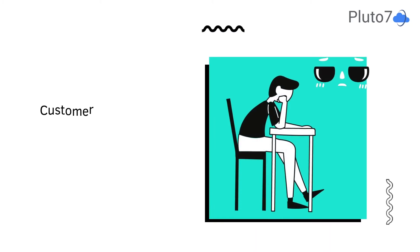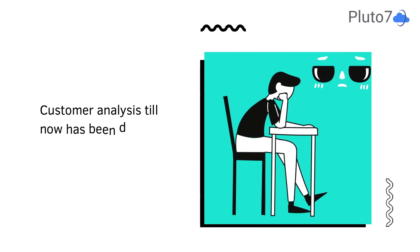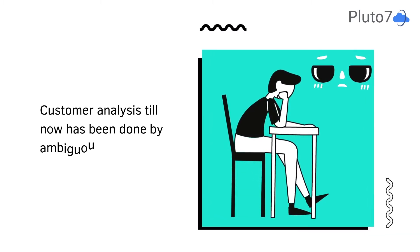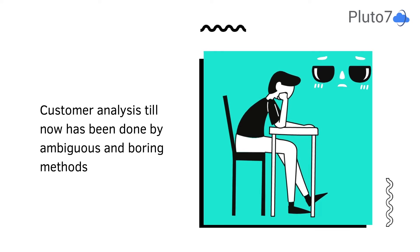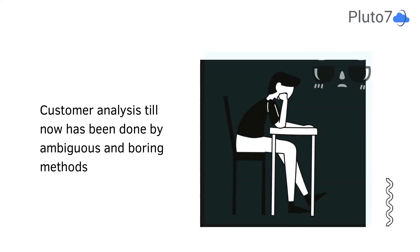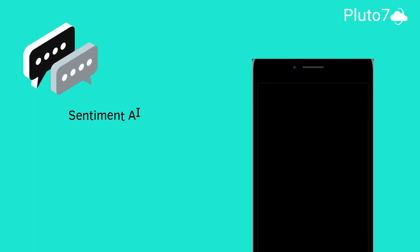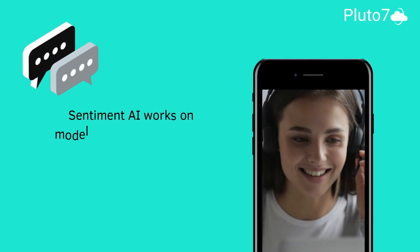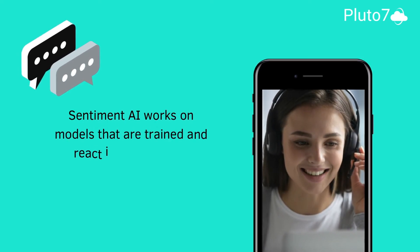Customer sentiment has been traditionally done through net promoter scores and surveys, which are often ambiguous, time-consuming, and skewed. Sentiment AI can react to a customer or a group of customers instantly through triggers that a model is trained on.